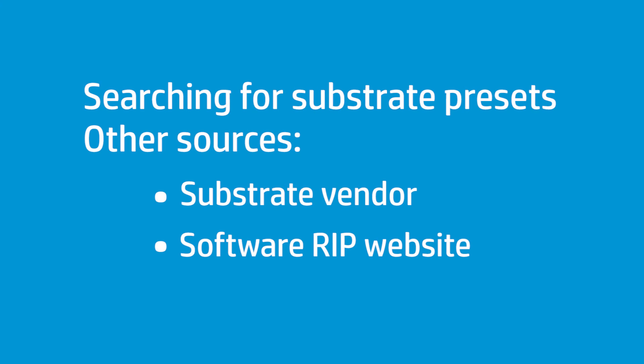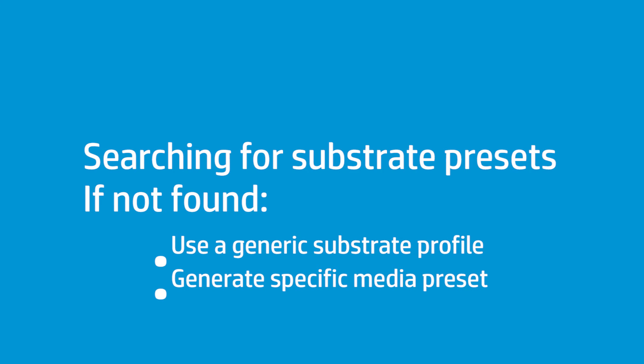If there is no specific profile available for your substrate at the HP Media Locator web page, you can try to obtain it from different sources like the substrate vendor or your software RIP's website. If you can't find a specific profile for your substrate, you can use one of the generic substrate profiles already installed on your printer and available from most software RIPs, or you can generate a specific substrate profile using your printer by following a quick and simple process. You can find the details about this process in the user's guide and in other available videos.